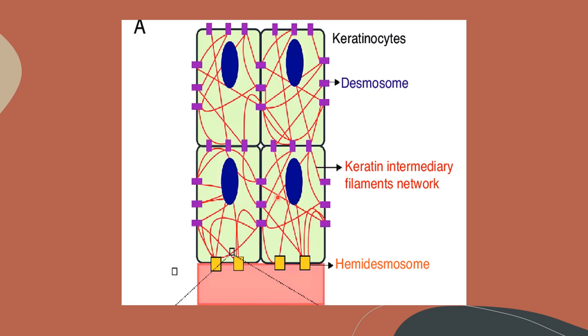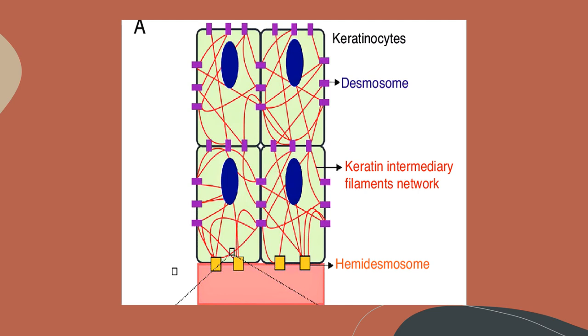thereby preventing blisters of the skin. If intermediate filaments are defective or damaged, this can lead to excessive stretching, causing blisters of the skin. To summarize, the intermediate filaments help cells resist external pressure and prevent excessive stretching.